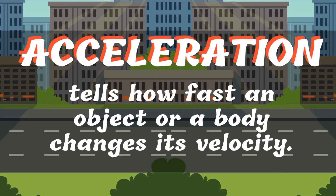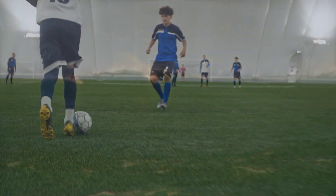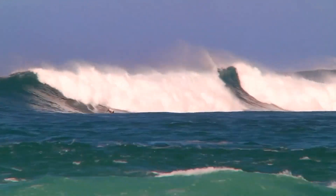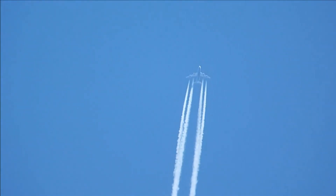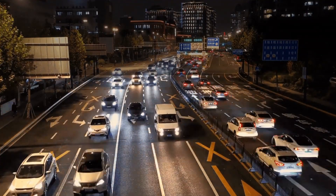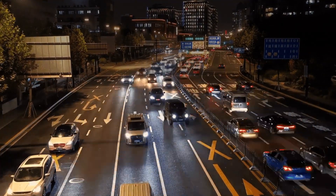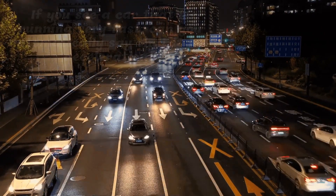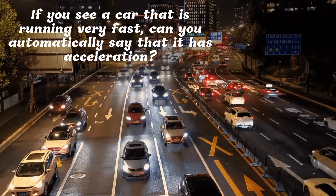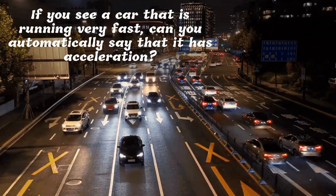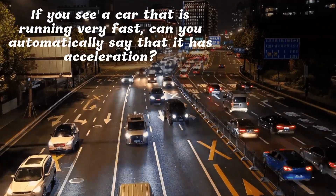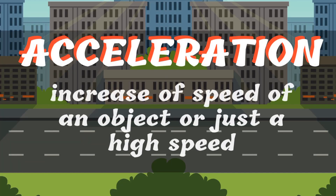Acceleration tells how fast an object or a body changes its velocity. Acceleration is observed in many of our activities as we travel to other places, whether by land, by sea, or by air. We can also observe it when we are just walking, and even in objects that are in motion around us. If you see a car that is running very fast, can you automatically say that it is accelerating? We often associate acceleration as the increase of speed or just a high speed, but there are things to consider for us to say that an object accelerates.